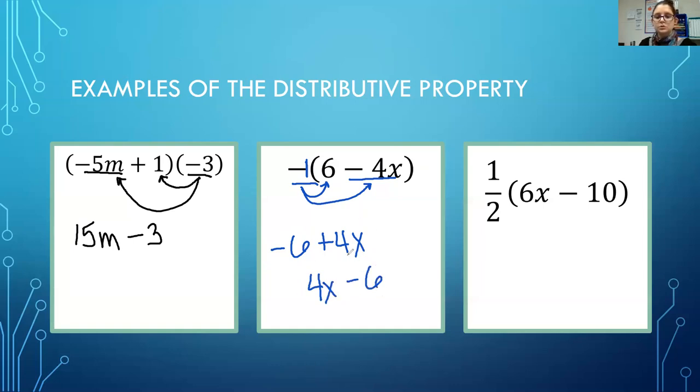Generally when we line up our numbers, the variable, the number with the variable comes first. The number by itself comes second. And we'll look at that more in the combining like terms video which will come up later this week.